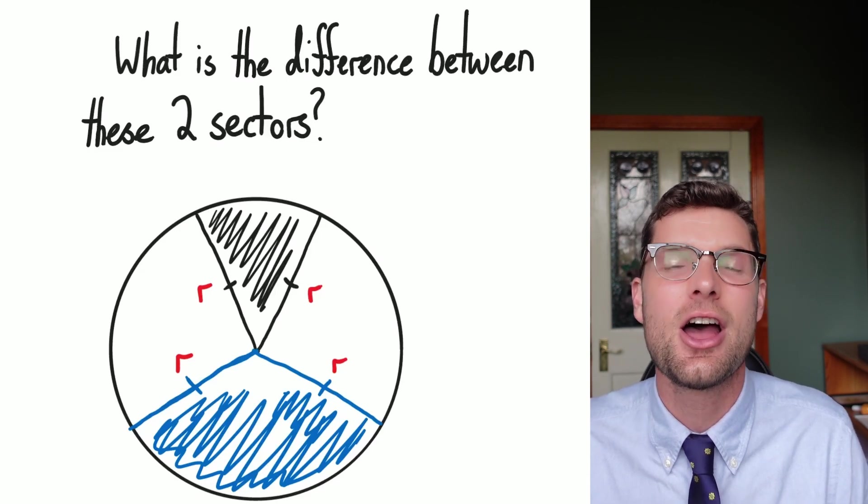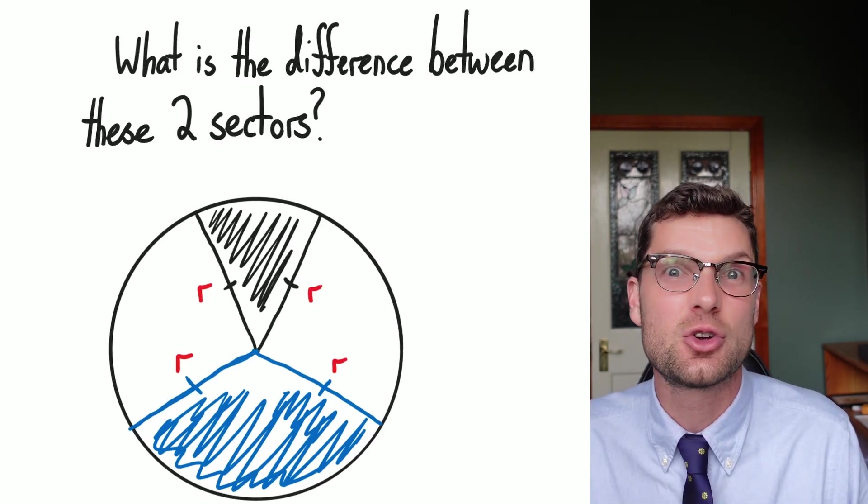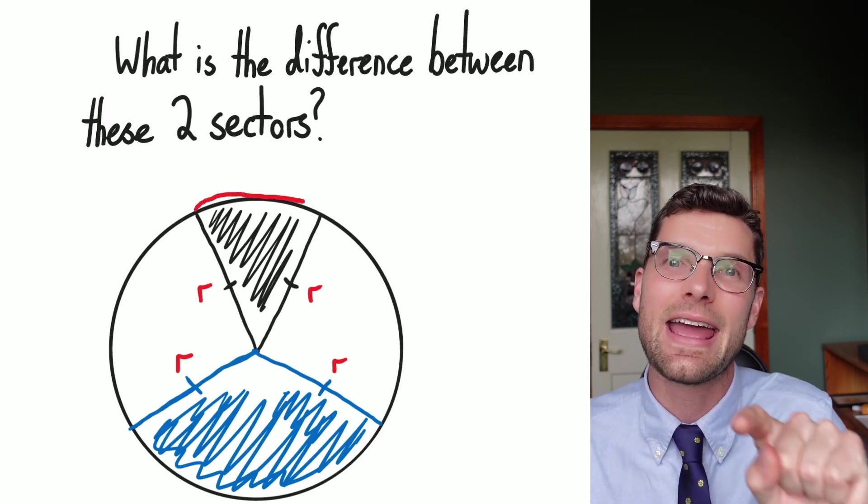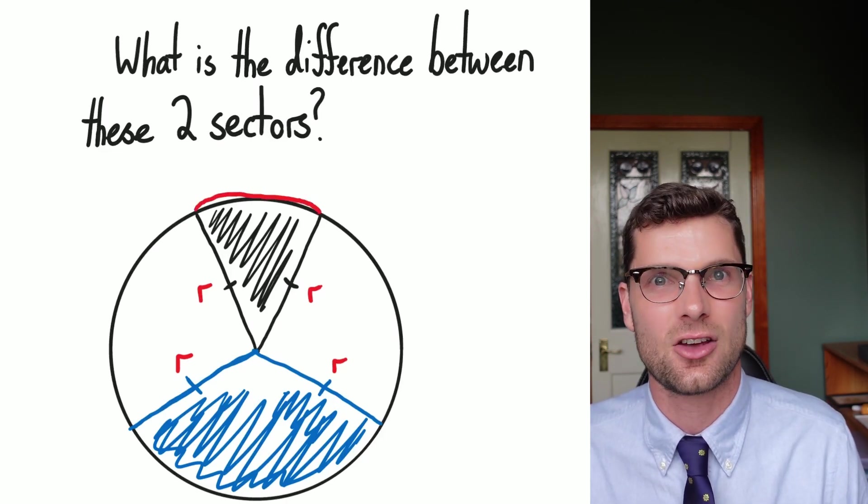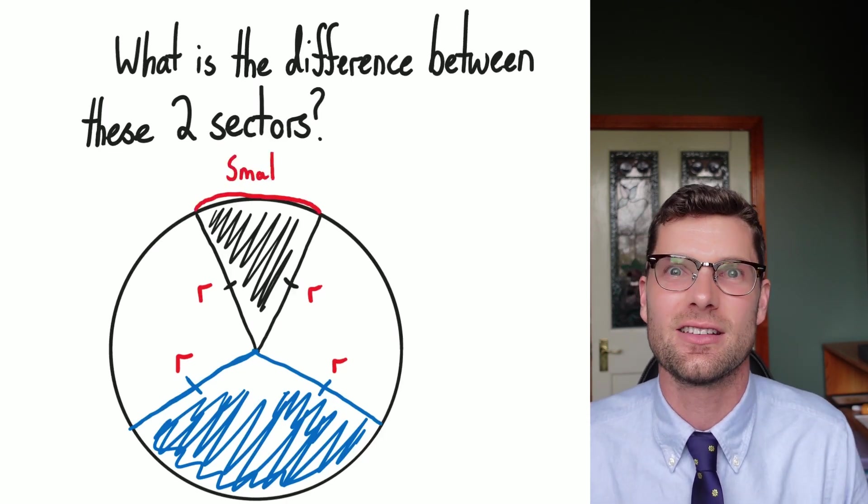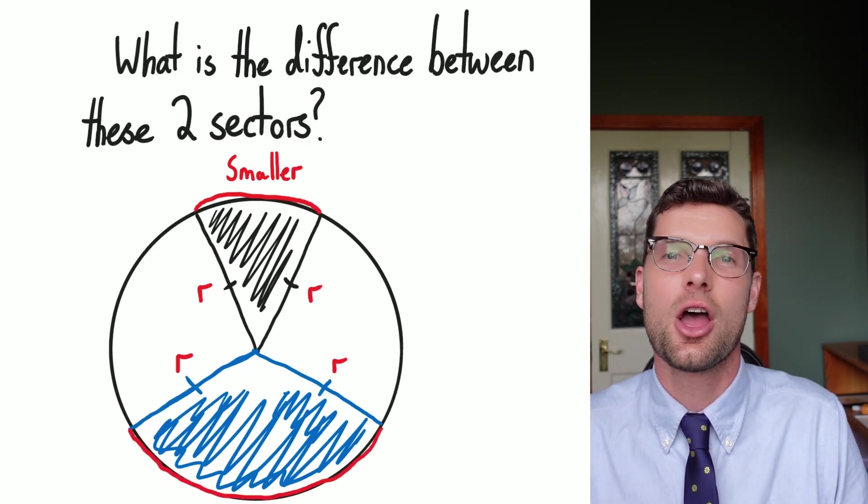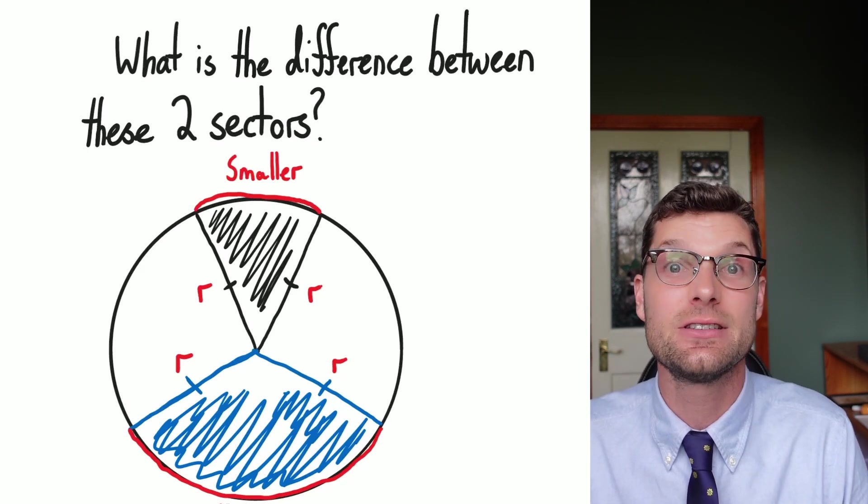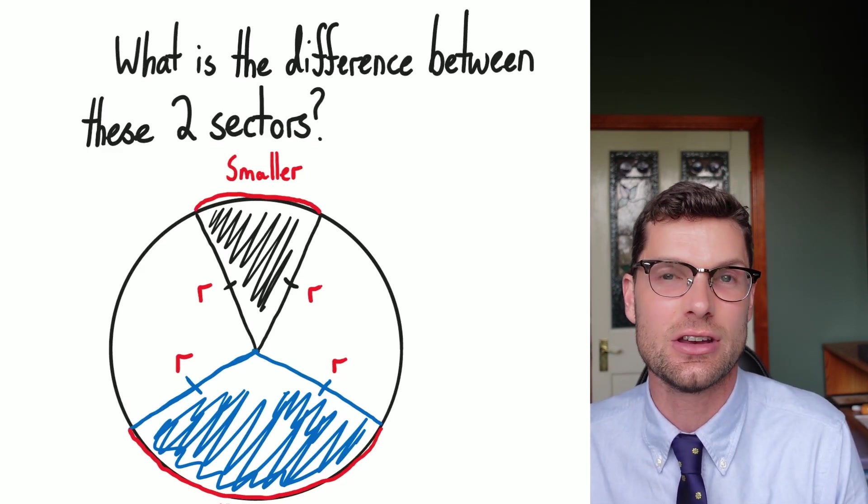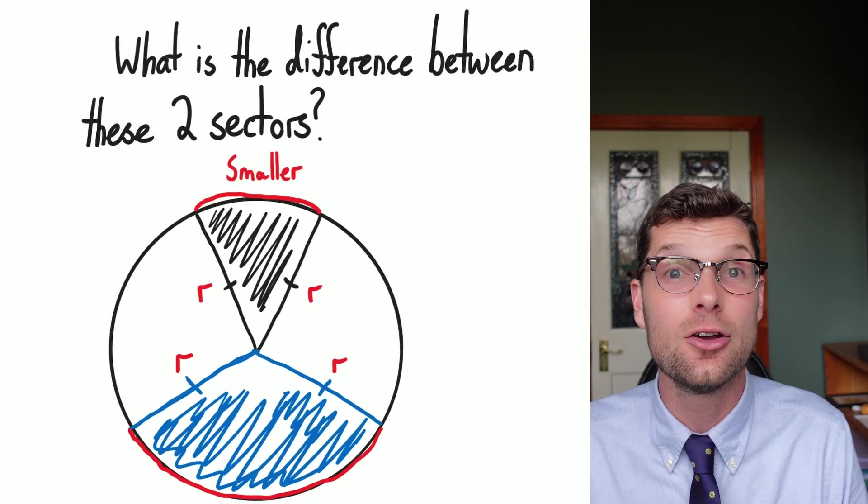So the only difference between these two sections is the length of the circumference on the outside. You can tell me quite obviously it would take longer to walk around the blue section than it would the black section.